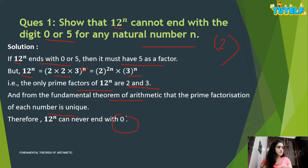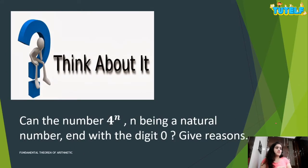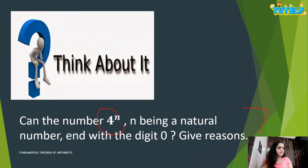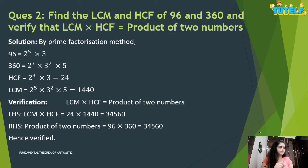If you solve your answer up to the factorization step, you get one mark, and for the conclusion step you get another mark. As a practice question, consider: can the number 4 raised to power n, where n is a natural number, end with digit 0? Try to solve it, and if you have any doubt, post in the comment section.